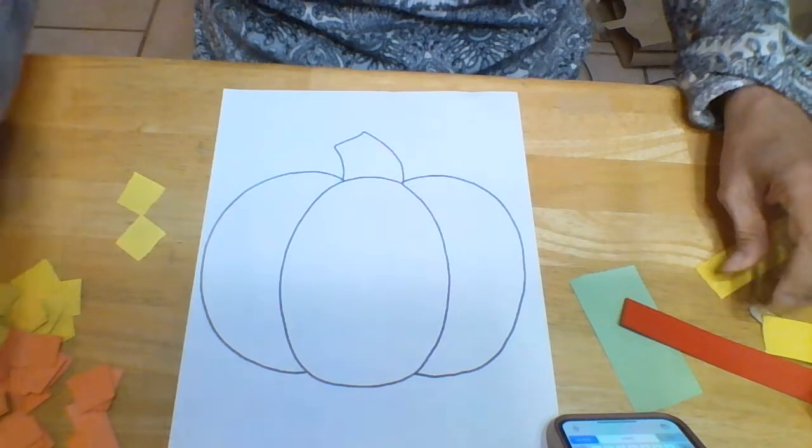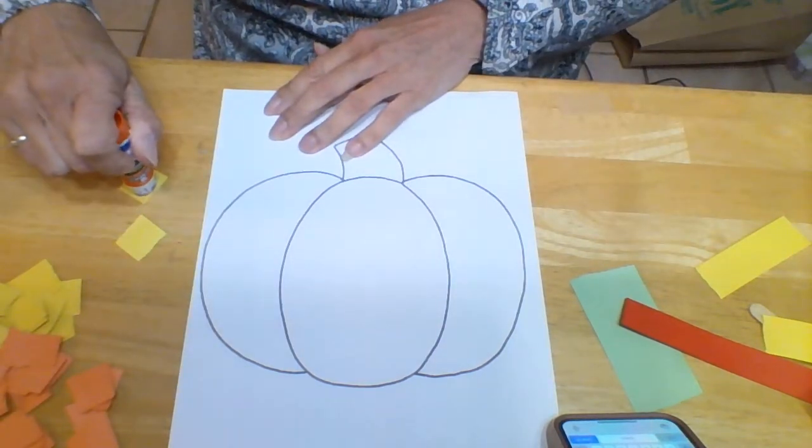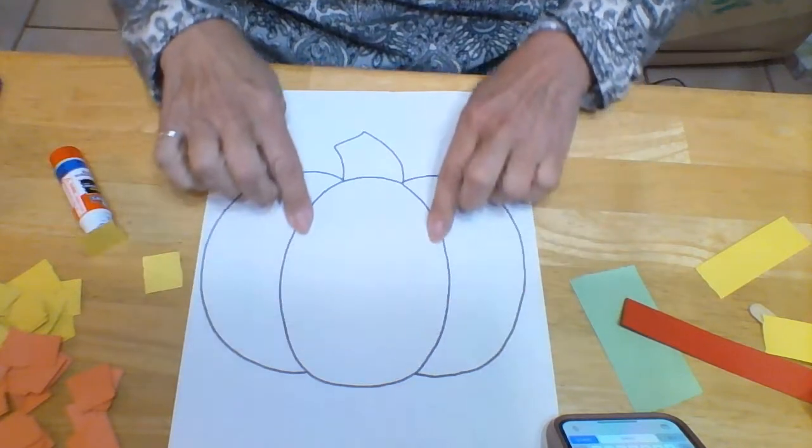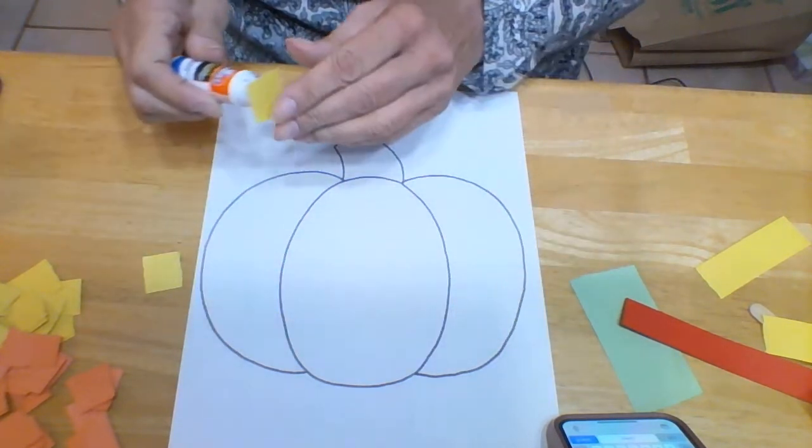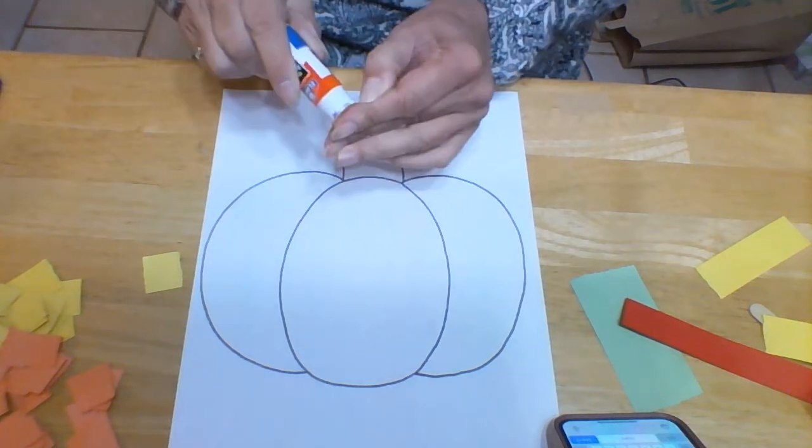Not tiny, tiny little pieces. We don't want them this small. And then we're going to pretend that these are magic lines that we're not going to cover, if we can help it.